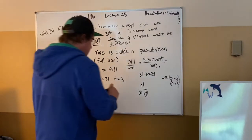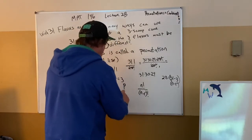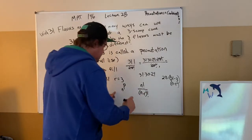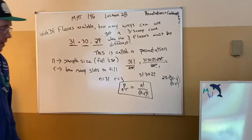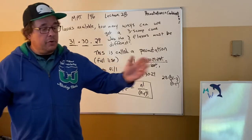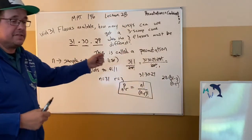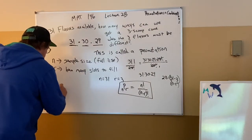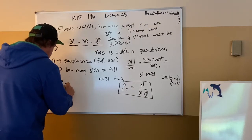A permuted list is a full list where you start with a full opportunity and cut off the end when you get enough spaces filled. So if we want 31P3: n goes in as 31 factorial divided by (n minus r) factorial, which is (31 minus 3) factorial — that's 31 factorial over 28 factorial. I need 28 factorial to match on both the top and the bottom.